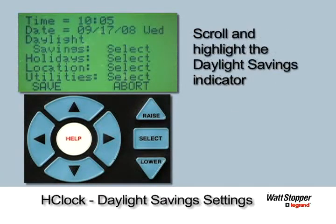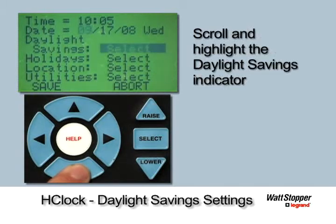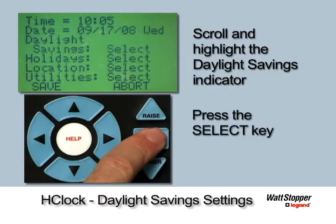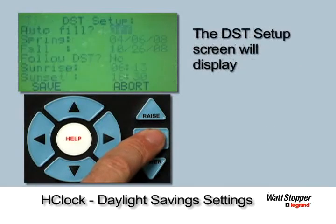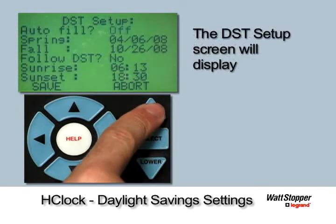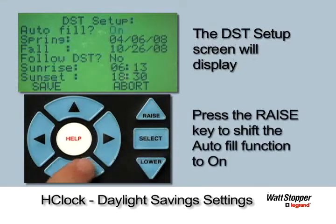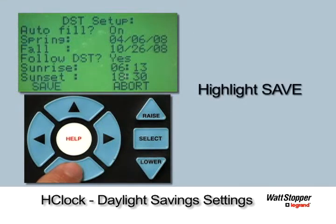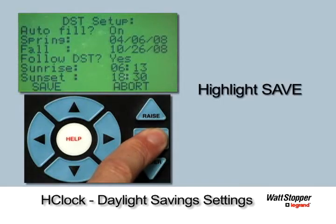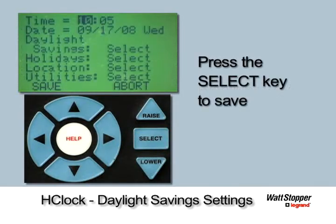To accommodate the daylight savings time change, scroll until the daylight savings indicator is highlighted, then press the Select key. The DST screen will display. The DST setting is now set to Yes, and the Spring-Fall Sunrise Sunset settings are adjusted. Press Select to save.